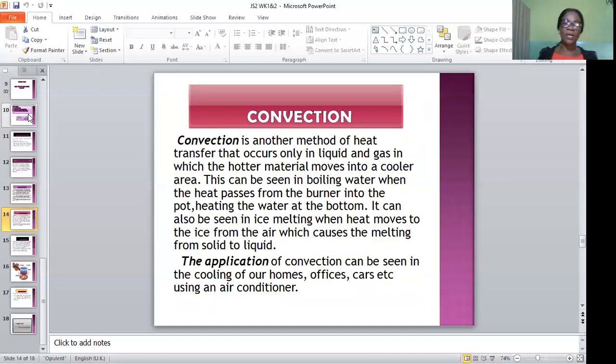Convection is another way in which heat can be transferred. What is convection? Convection is a method of heat transfer that occurs only in liquid and gas in which the hotter material moves into a cooler area. This can be seen in boiling water when the heat passes from the burner into the pot, heating the water at the bottom. It can also be seen in ice melting when heat moves to the ice from the air which causes the melting from solid to liquid. Let me give you a typical example. You have a cup of ice cream or ice block. Once you bring it out from the freezer and place it on the table, in a matter of minutes, you will see that the solid which is the ice will be melting to liquid. That is a form of convection.